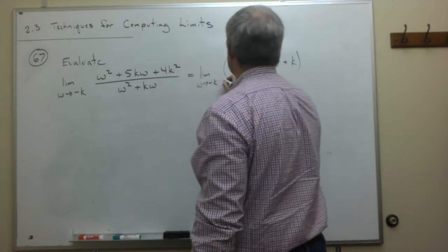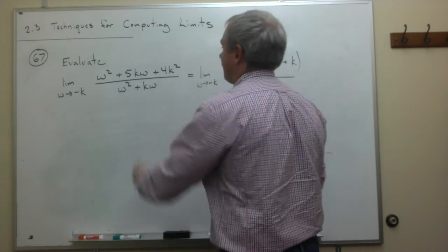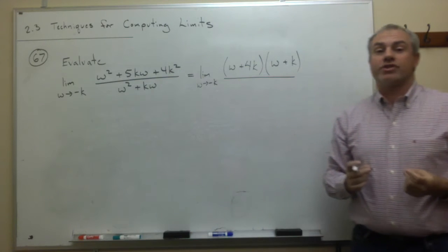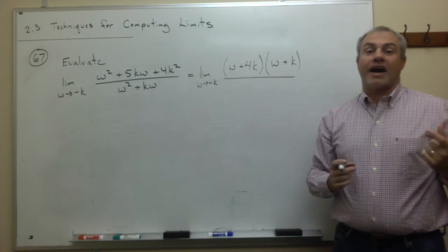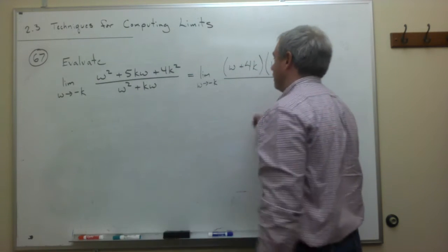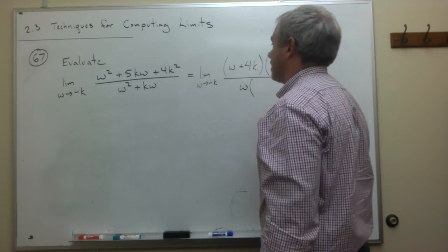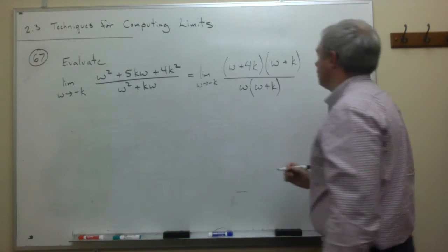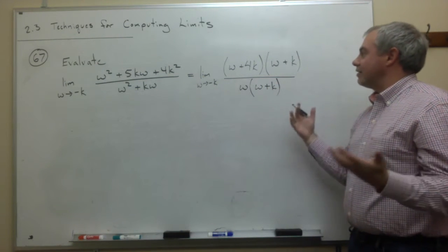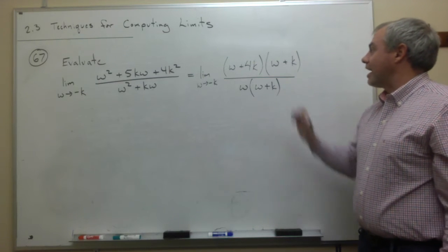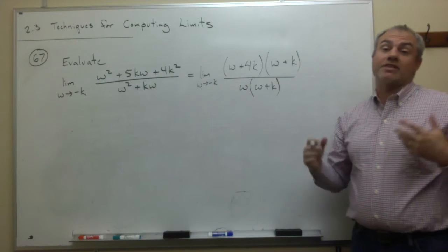And on the bottom, we have w squared plus kw. But notice that both of those terms have a common factor of w, so I can factor out a w. So I get w times w plus k. And now we see that this is actually quite wonderful, because on top and bottom, I have a factor of w plus k.